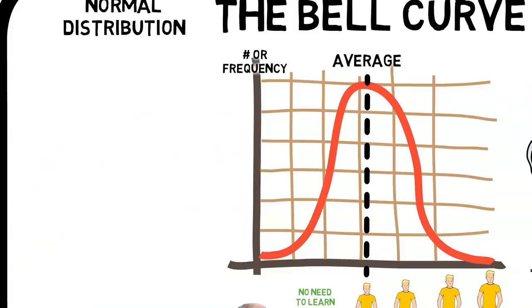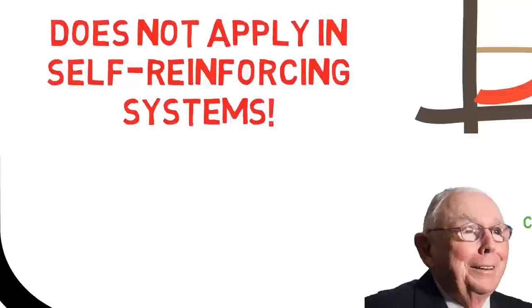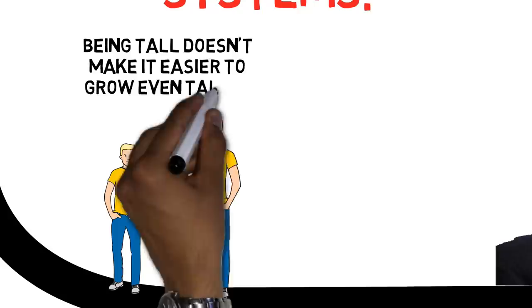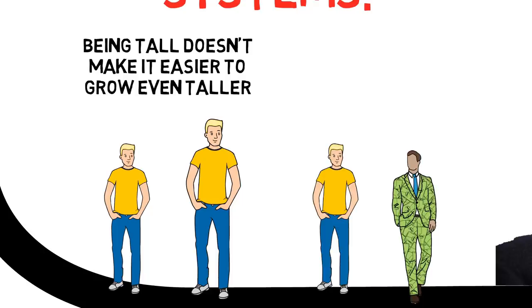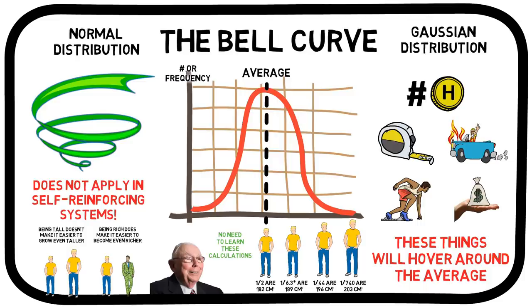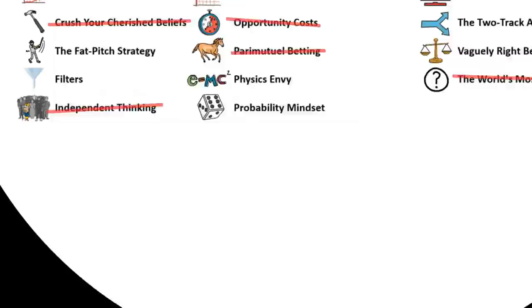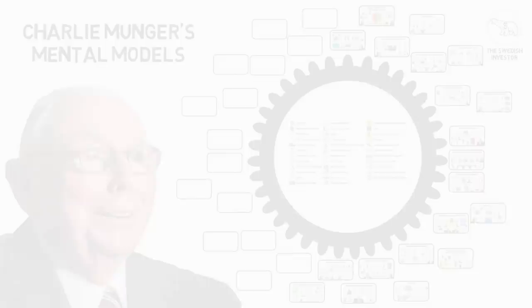Be especially careful when applying the bell curve to data from any system that might be self-reinforcing. For example, passing 2m in height doesn't make it easier for a human body to grow even more — but passing $2m in net worth makes earning additional money simpler, as you can put that money to work. Height follows a Gaussian distribution, while the net worth of individuals does not. This leads us to the first topic of the next video, where we shall examine how humans crave elegancy, but how some areas cannot be reduced to Newtonian formulas, and how dangerous it is to rely on precision in such areas.